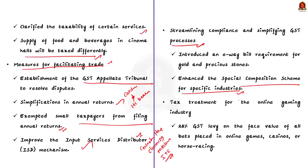Lastly, the council made a significant decision regarding tax treatment for the online gaming industry. It finalized a 28% GST levy on the face value of all bets placed in online gaming, casinos, or horse racing. This decision has drawn concerns from businesses and e-gaming players, as they feel this move will threaten a nascent industry and affect employment of thousands of people in India. This is the overall highlight of the 50th GST Council.